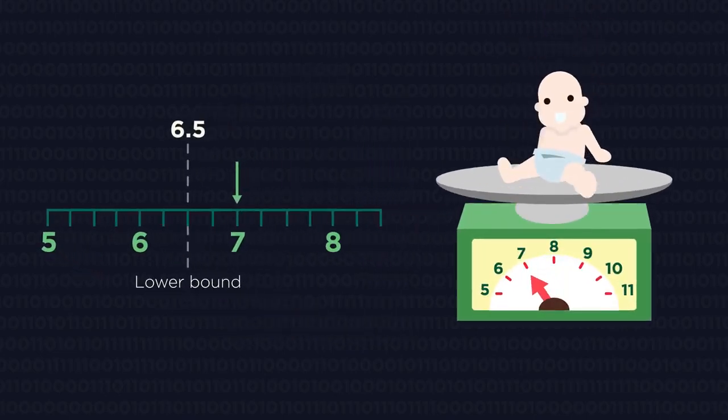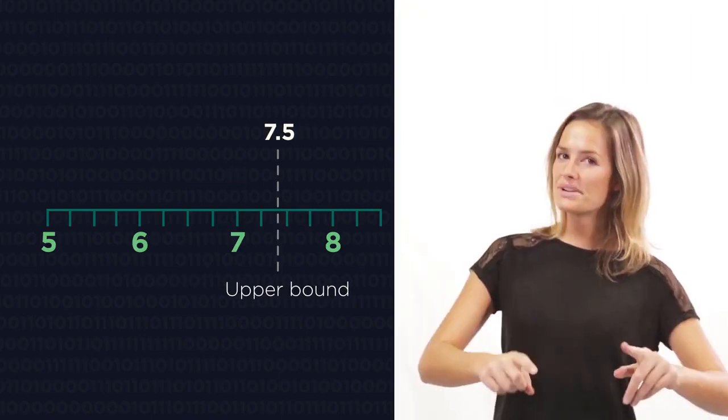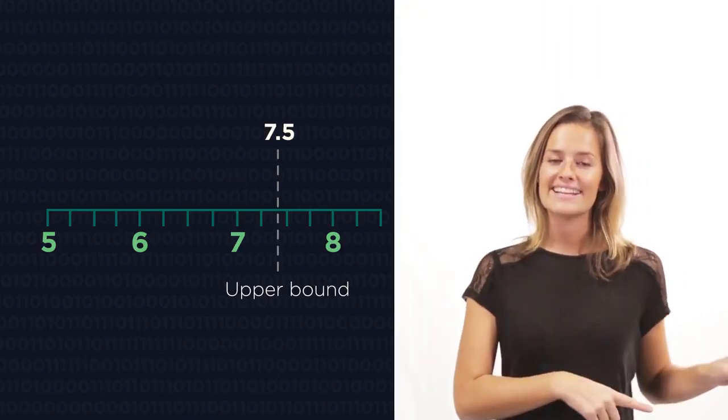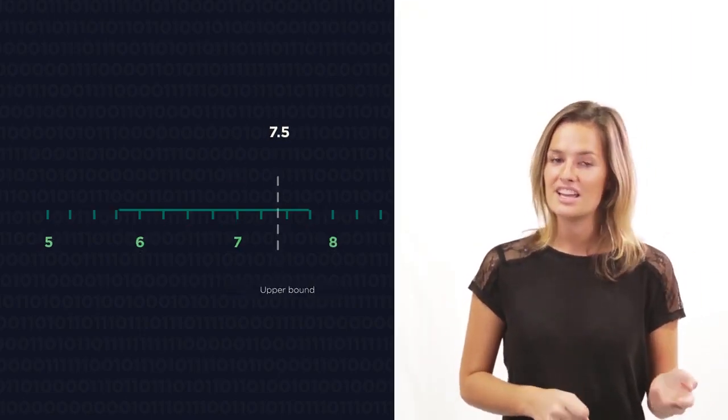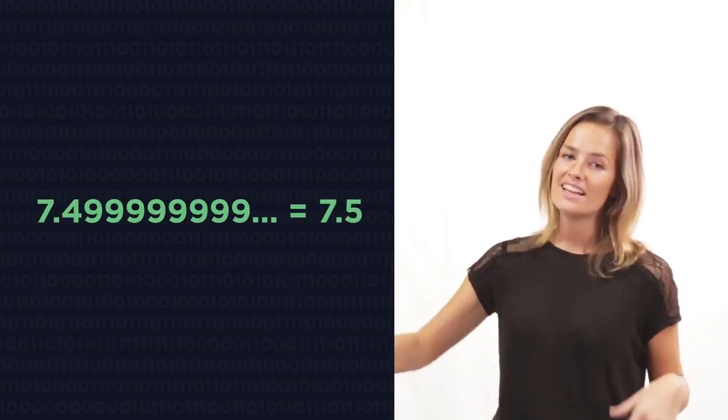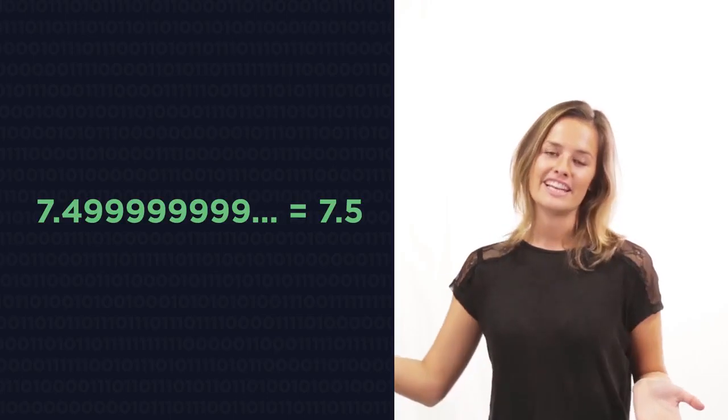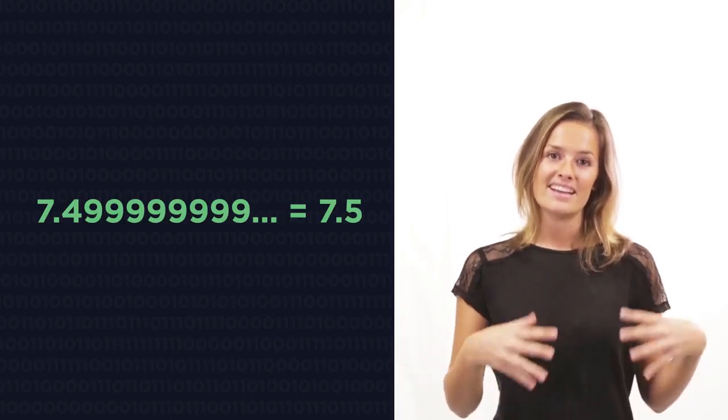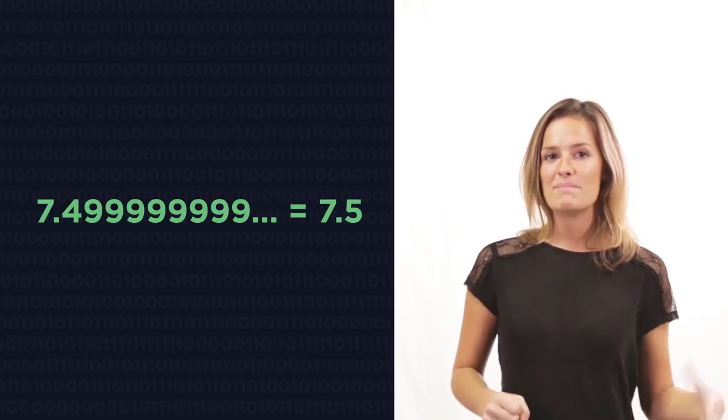So what's the heaviest that the baby could be for it to round down to 7 kg? Do you agree that it is anything less than 7.5? So 7.49999 recurring. The nines recur infinitely, and so we say it is equal to 7.5. So the upper bound is 7.5 kg.